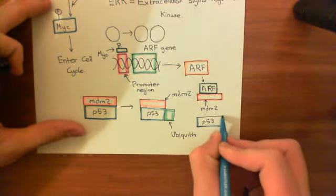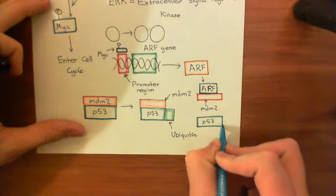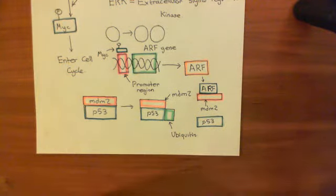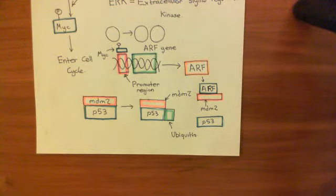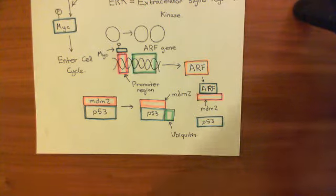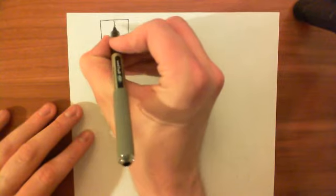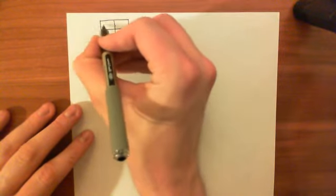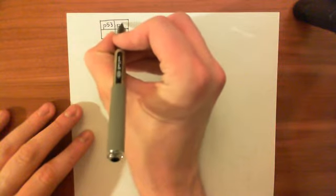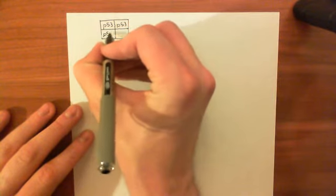P53 is now activated — alerted to the fact that the cell is dangerously overstimulated and potentially cancerous. If you've got ridiculously high mitogen levels, you can think of this as a protection against cancer. Mitogen levels suggest the cell itself has become carcinogenic, and P53 needs to be activated. P53 is a transcription factor — specifically, it forms a tetramer in order to become a transcription factor. Four active P53 molecules need to bind together, and then it can bind to promoter regions of genes and alter the transcription of those genes.